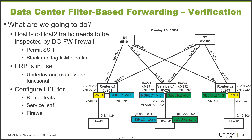Here is our topology. We have router L1 and router L2 which act as router leaves, and then service leaf L1 which is our service leaf, and DCFW which is the data center firewall. Other learning bytes cover the configuration of those devices, but this learning byte focuses on verification — making sure this actually works. We are sending traffic from host 1 to host 2, wanting that traffic to be inspected, permitting SSH traffic and blocking and logging ICMP traffic.